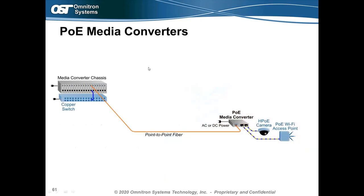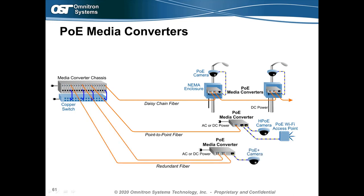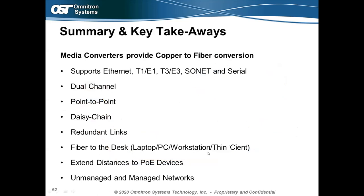PoE media converters support multiple topologies — point-to-point fiber or daisy-chaining with multiple fiber ports. Fiber comes in, drops off PoE, and passes fiber down to the next streetlight, eliminating the need for a dedicated fiber run to each pole — you daisy-chain until bandwidth is exhausted. Multi-fiber PoE media converters also support redundant fiber paths: for mission-critical applications, run fibers through geo-diverse paths so that if fiber A fails, traffic automatically switches over to the standby fiber.